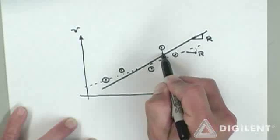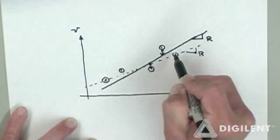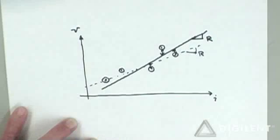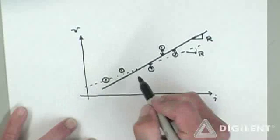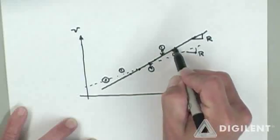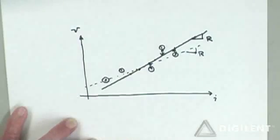A least squares best fit is one way to decide what this straight line slope should be. You can also get an idea as to how much spread or uncertainty there is in this straight line estimate by calculating a correlation coefficient — that is our R value. An R of 1 means that all of this data lies exactly on the line, and an R of 0 means that there is essentially no straight line that can accurately be drawn through the data.